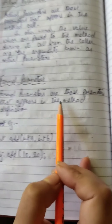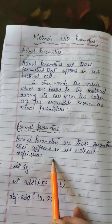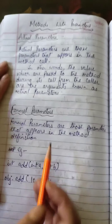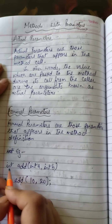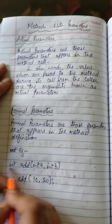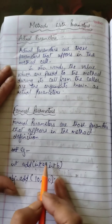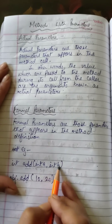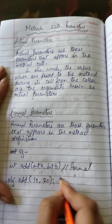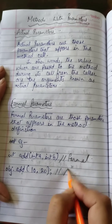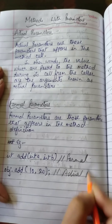Now let's see formal parameters. Formal parameters are those parameters that appear in the method definition. When we are defining a method, that is when the formal parameters appear. For example, in int add(int a, int b), a and b are formal parameters. So the parameters in the method definition are formal parameters, and those in the method call are actual parameters.